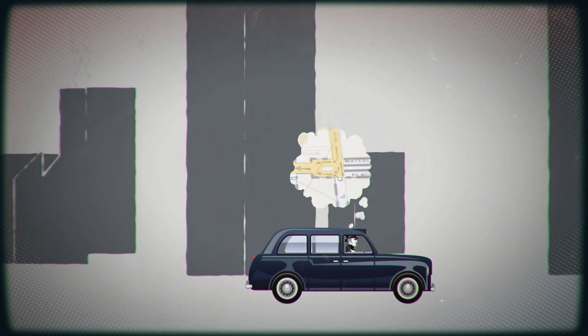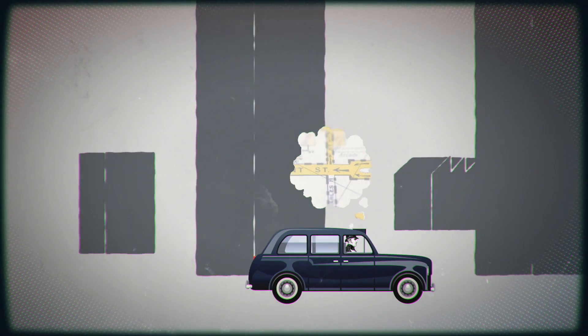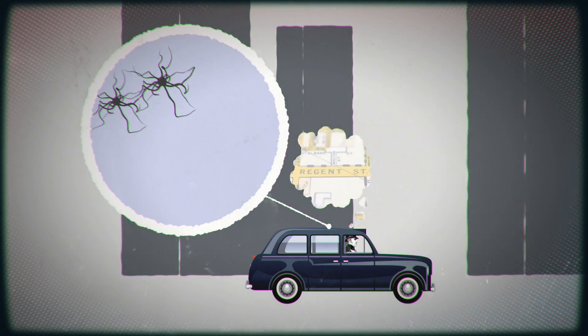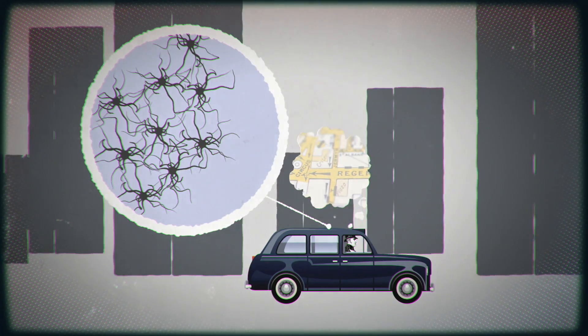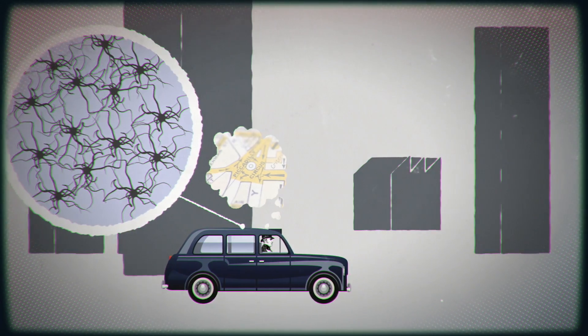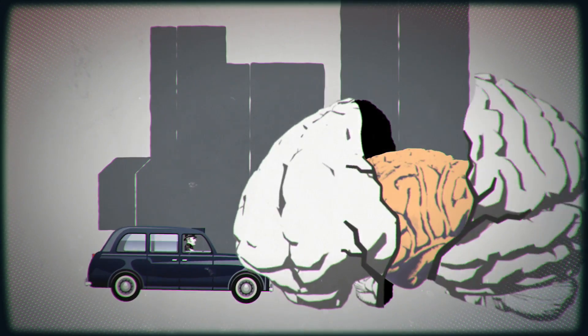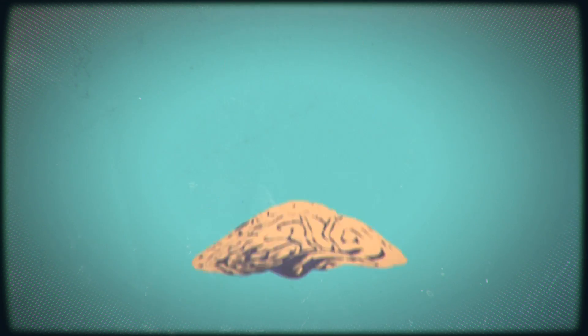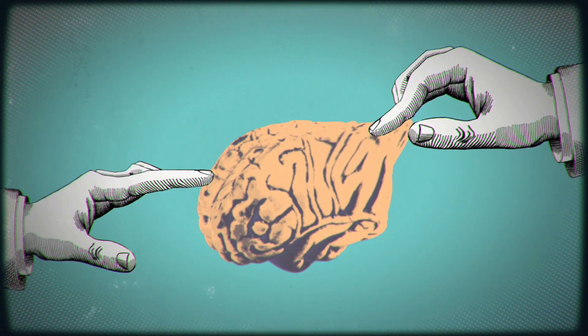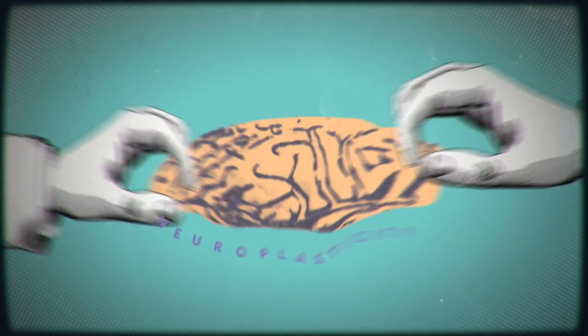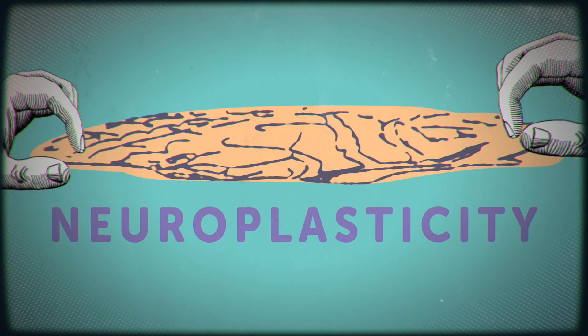In memorising and using their mental map of London, the cabbie's brains adapted and changed, creating more synaptic connections. So it turns out the brain isn't like concrete, but more like putty or plastic, able to adapt to our demands. Scientists call this adaptability neuroplasticity.